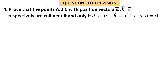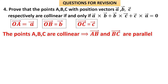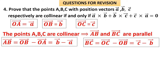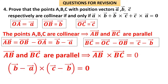Question 4: Prove that points A, B, C with position vectors a, b, c are collinear if and only if a × b + b × c + c × a = 0. The points are collinear if vectors AB and BC are parallel — their cross product equals zero. AB = b − a and BC = c − b, so AB × BC = (b − a) × (c − b) = 0.